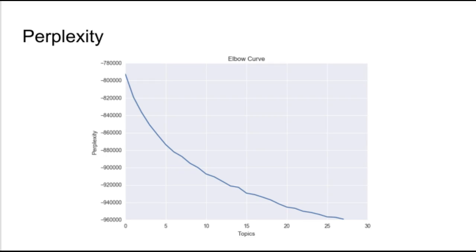In this next graph we can see how perplexity changed with the number of topics selected. On the x-axis we see the number of topics used to describe the data — these values should be multiplied by five — and on the left axis we have perplexity.